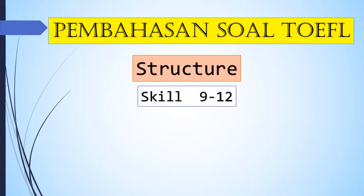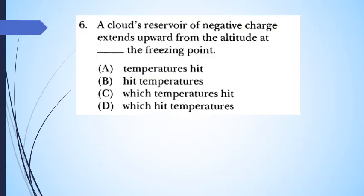Soal nomor 9 sampai dengan 12, soal nomor 5 sampai dengan soal nomor 6. Di bagian kedua ini kita akan membahas soal nomor 6 sampai dengan soal nomor 10. Kita lanjutkan dengan soal nomor 6 ya. A cloud reservoir of negative charge extends upward from the altitude at the freezing point.